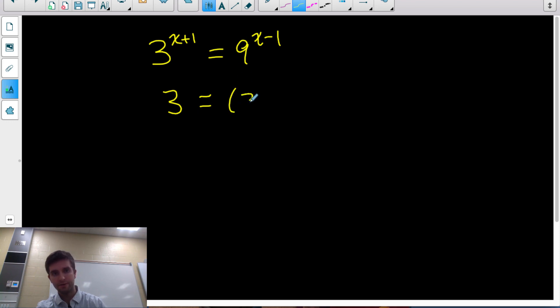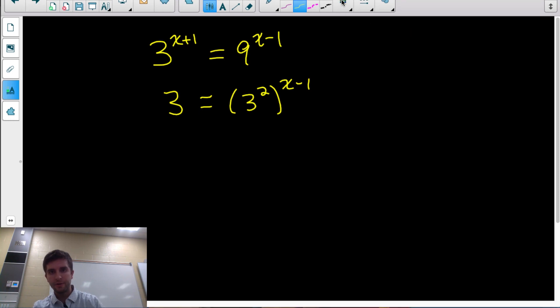9 is 3 squared, so I could rewrite this as 3 squared to the x minus 1. What's the purpose of doing this? Why rewrite them with the same power? Well, think about it. Let's say we had x^a equals x^b. If I have two powers equal to each other that have the same base, the only way this equation could be true is if the exponents a and b were the same thing, if a and b were equal to each other.